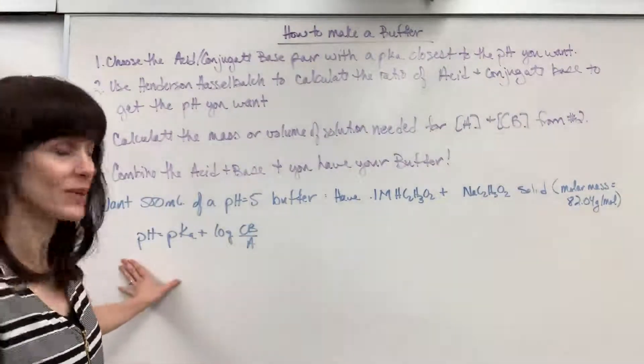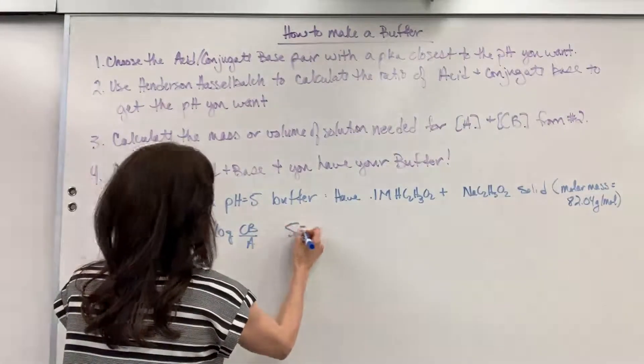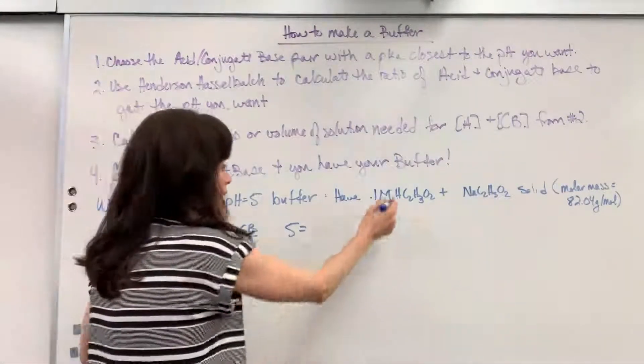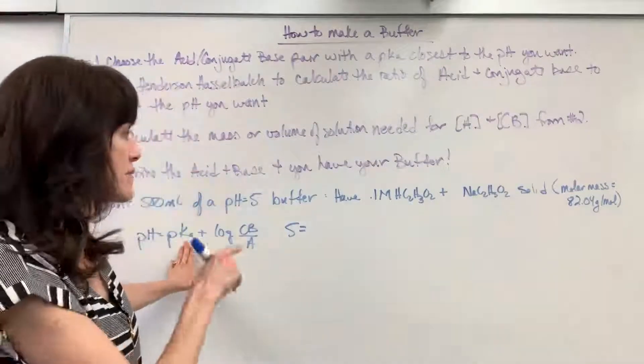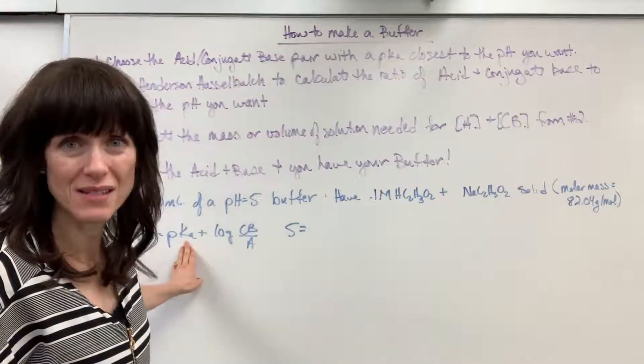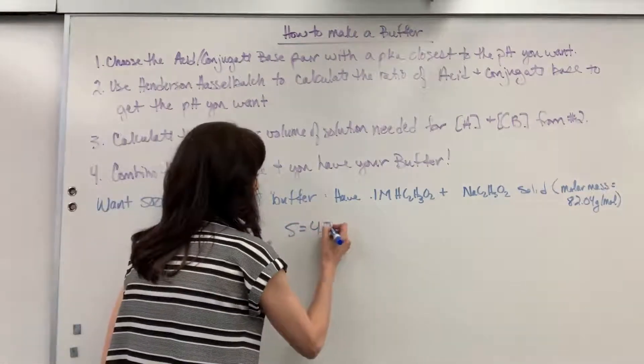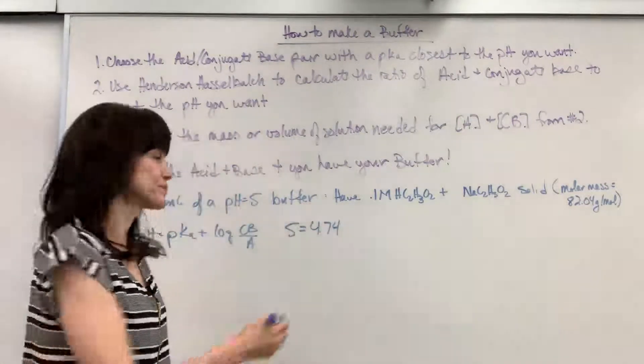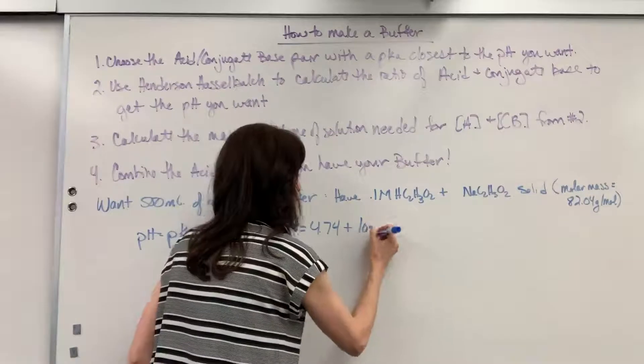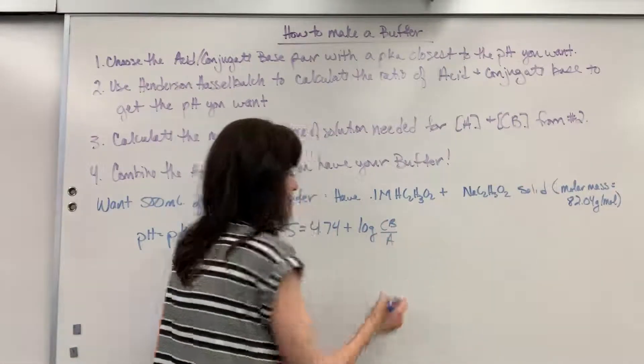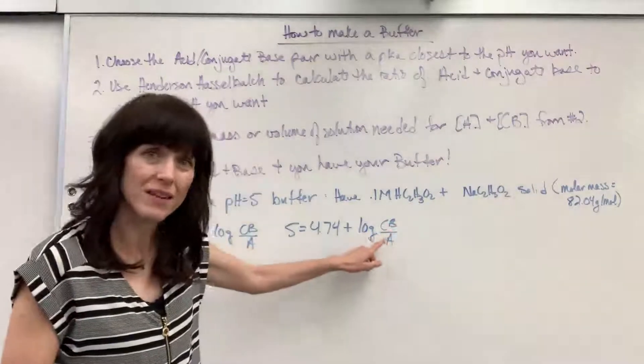pH equals pKa plus the log of the conjugate base over the acid. What do I know? I know I want a pH of 5, my pKa, remember this is just looking at the Ka of the acid, taking the negative log. This is going to be my ratio, conjugate base over acid. That's what I'm trying to find right there is the ratio.